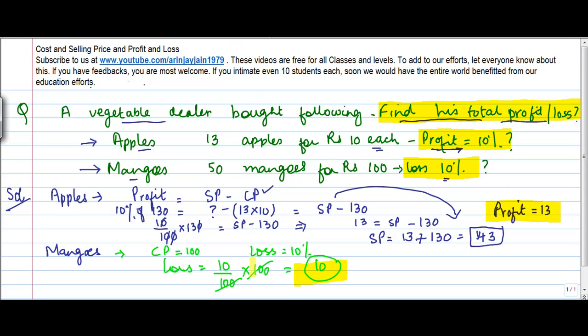The profit on apples is 13, okay, so my total profit - because profit is greater than loss - so on an overall basis I made a profit is equal to 13 minus 10 is equal to 3.